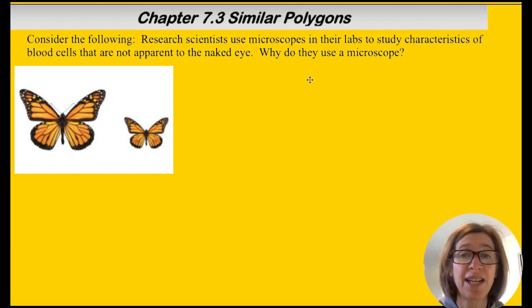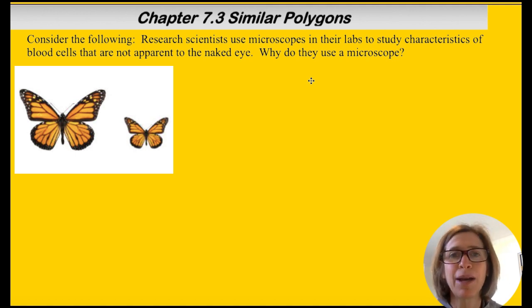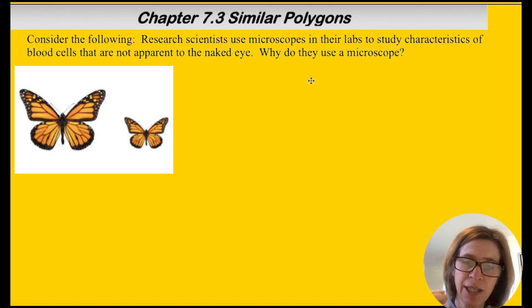Hi everyone. So today we're going to continue our study of similar polygons and what this has to do with the ratios and proportions we've been working with. But I want you to consider this question. Research scientists use microscopes in their labs to study characteristics of blood cells that are not apparent to the naked eye. Why do they use a microscope? I think now more than ever we know there's so many scientists using microscopes. The reason they use a microscope is because they can make this shape smaller without actually changing its characteristics. They are actually looking at a similar figure of a blood cell or a virus cell.